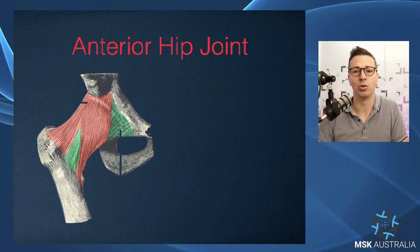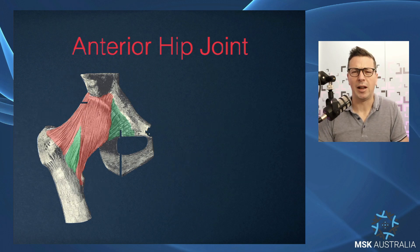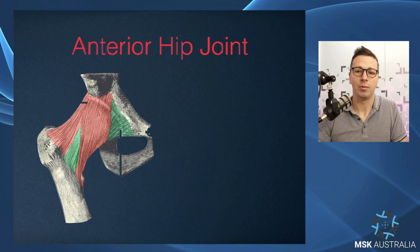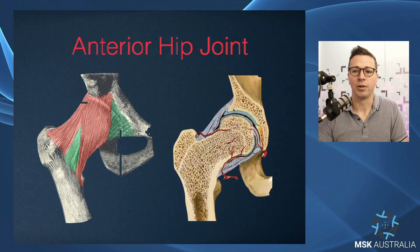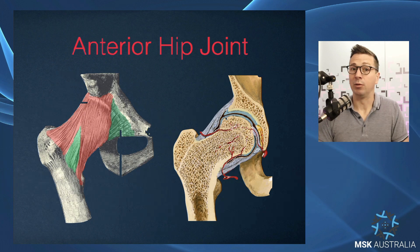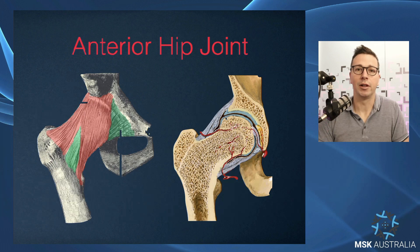When we assess the anterior hip joint, we're looking at two things: the extra-articular structures and the hip joint capsule itself — the iliofemoral and pubiofemoral ligaments, which make up the anterior hip joint capsule. Underneath here, we get a smaller assessment not only of the capsule but of the anterior joint recess. We get a very limited assessment of the anterior labrum and a very minimal assessment of the anterior cartilage. But if we pay attention to these, we can start to get an indication of what is happening intra-articularly using ultrasound.